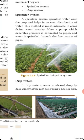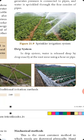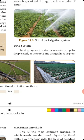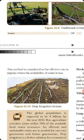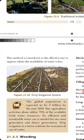In the sprinkler system, a pump which generates pressure is connected to pipes. Water is sprinkled through the fine nozzles of the pipes. In the drip system, water is released drop by drop exactly at the root zone using a hose or pipe. This method is considered effective in regions where the availability of water is less.